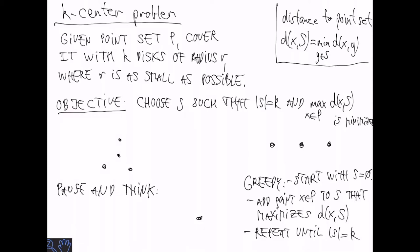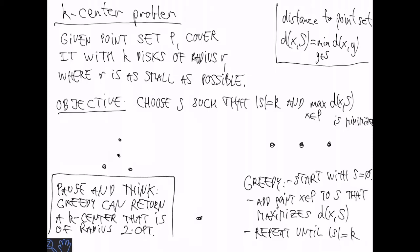At this point, I want you to pause and think. I want you to argue that greedy can sometimes return a k-center that is two times the radius of the optimal k-center solution.